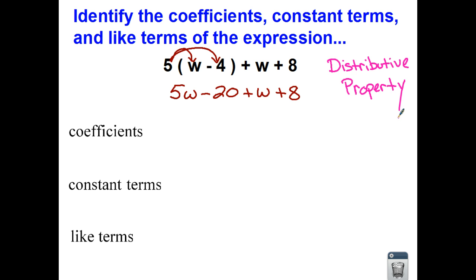Now that I have used my distributive property, I have this long line of terms and this expression. And according to the directions, again, I'm just going to be identifying or naming the different parts. First, the coefficients, I'm looking to see who's attached to the variables. I see a positive 5 and I see a positive 1.